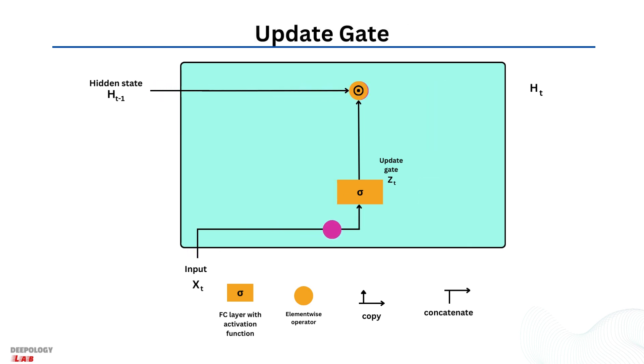The update gate helps the model to determine how much of the past information needs to be passed along to the future. That is really powerful because the model can decide to copy all the information from the past and eliminate the risk of vanishing gradient problem.